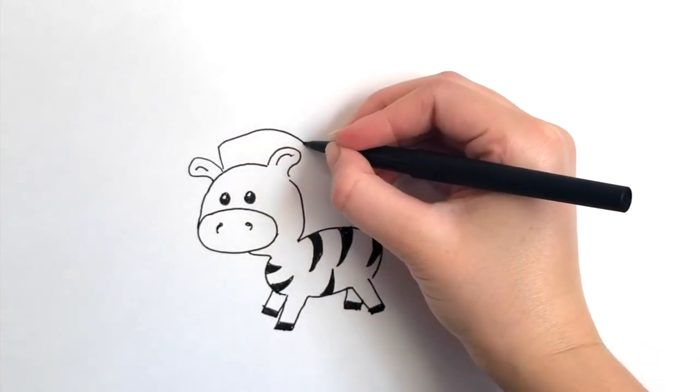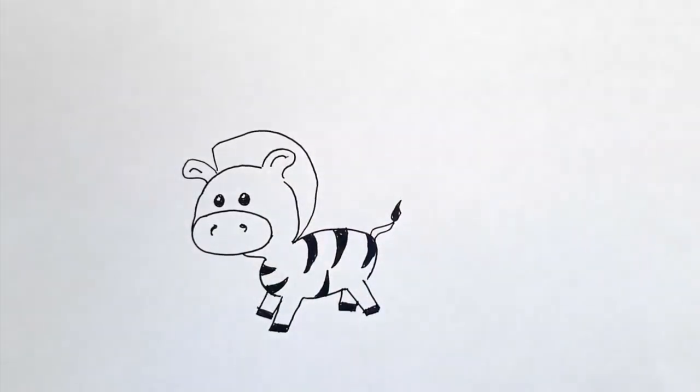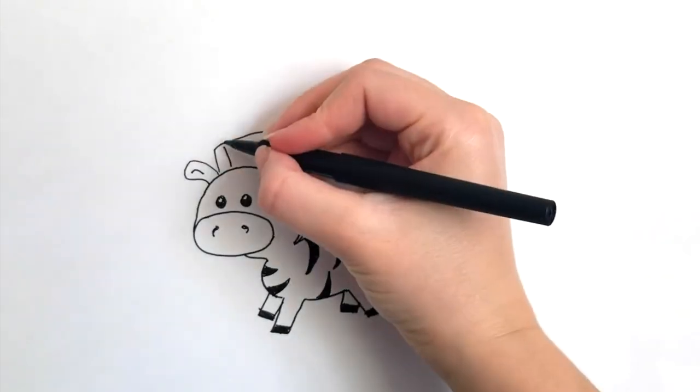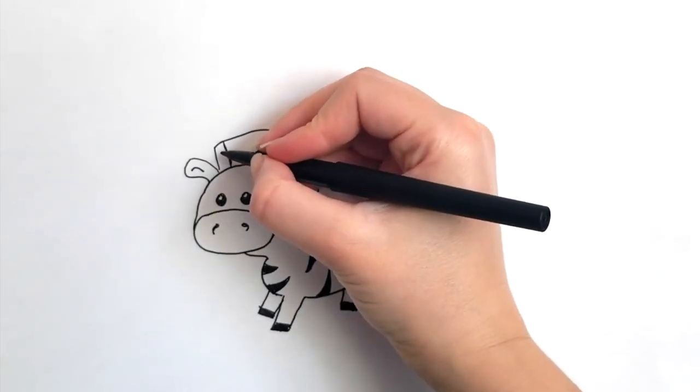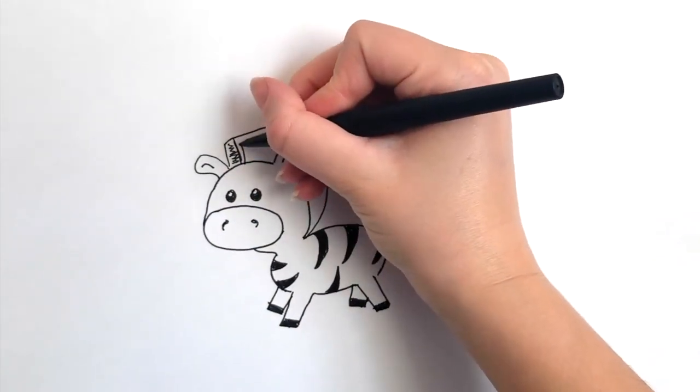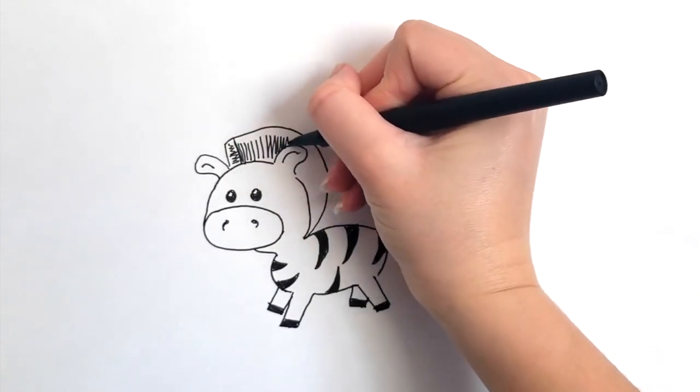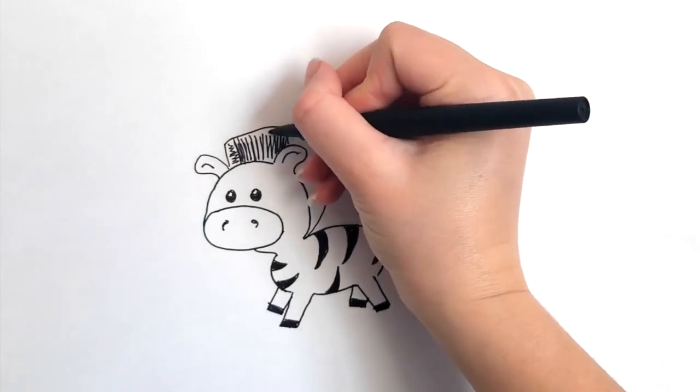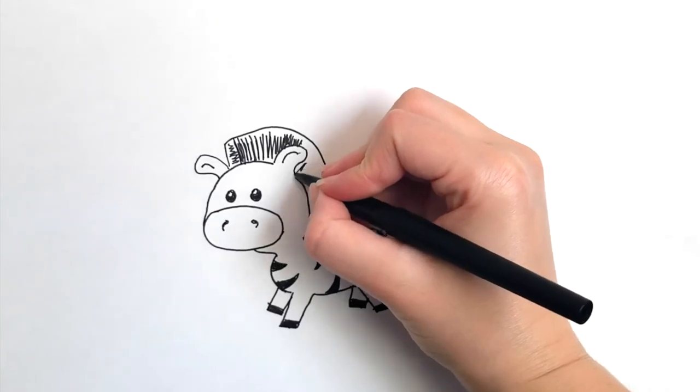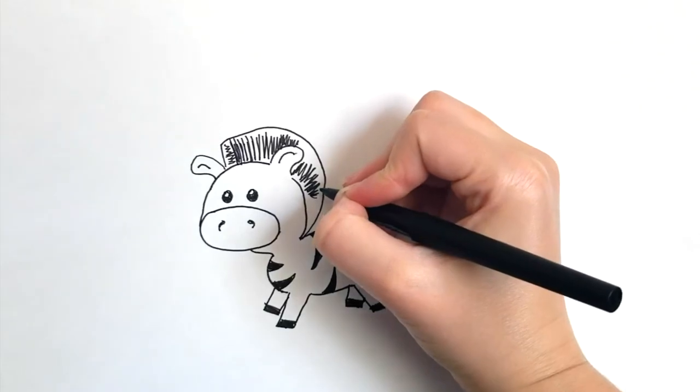Then we also want to add his mane, so we're gonna kind of make a mohawk on this guy. And I want you to be very aware of the direction you're drawing. So we're gonna make a little bit of a line at the front here, going sideways, give it a little differentiation. And then for the rest of the mane, you're gonna go up and down only. This is really important because the lines help you perceive which direction the hairs of the mane are going in. Just kind of fill that in.